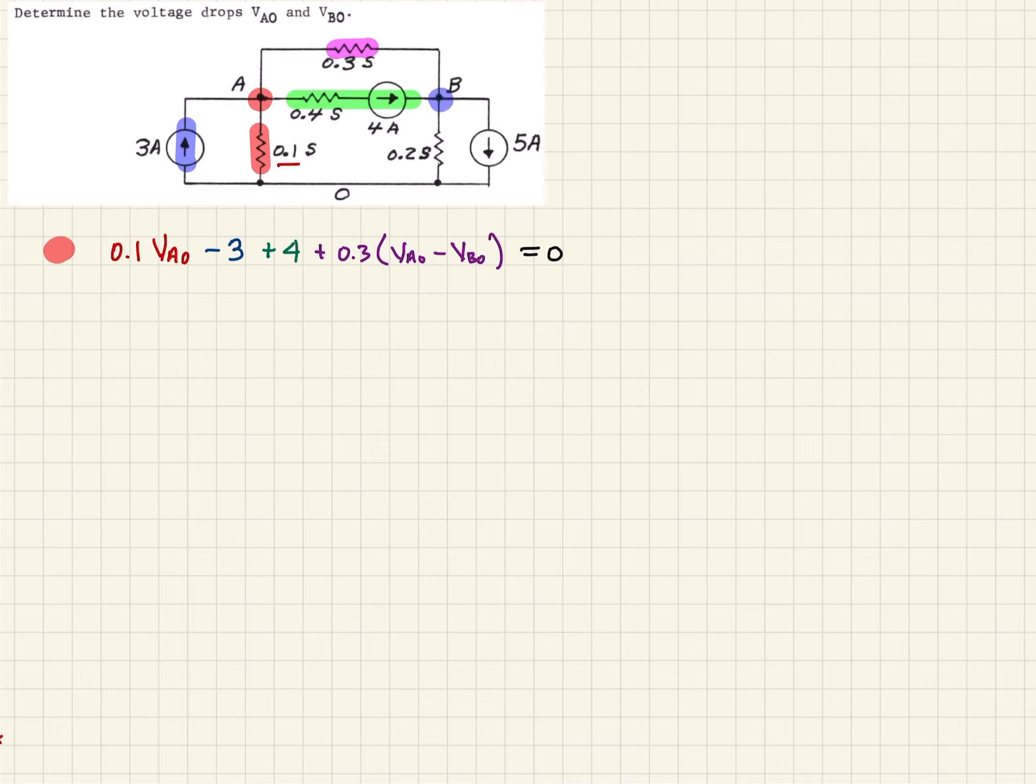And so we will write it on this line. The first thing we notice is this resistor. So if we write the current coming through that resistor, it's going to be 0.2 times VB0.